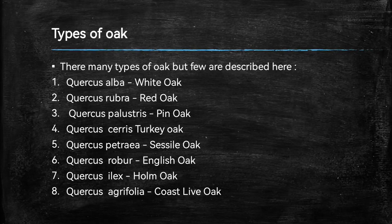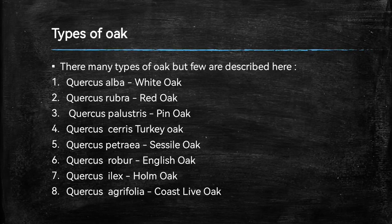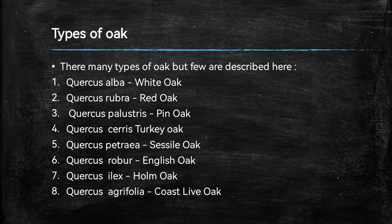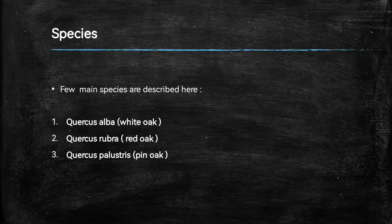Here are the types of oak trees. There are many different types of oak trees, but a few are described here: Quercus alba (white oak), Quercus rubra (red oak), Quercus palustris (pin oak), Quercus cerris (Turkey oak), Quercus petraea (sessile oak), Quercus robur (English oak), Quercus ilex (holm oak), and Quercus agrifolia (coast live oak). The few species that are most majorly important are Quercus alba (white oak), red oak, and pin oak.